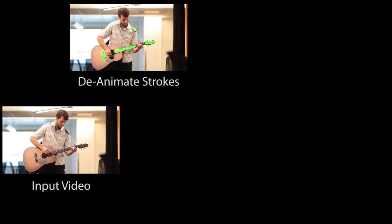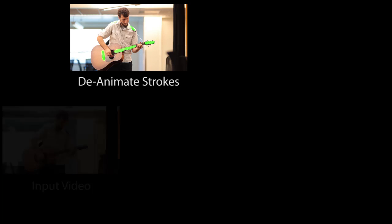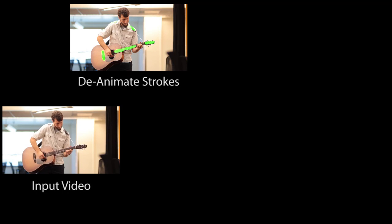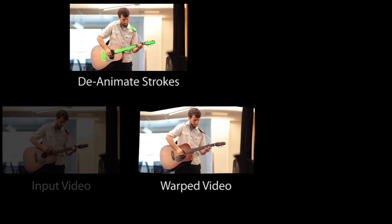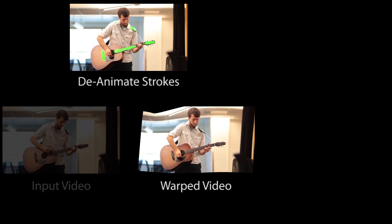Our method takes a video as input. The user then draws green strokes on the regions whose motion she wishes to remove. Our method uses these strokes to select tracks and guide a spatially varying warp that removes the motion of the indicated regions.